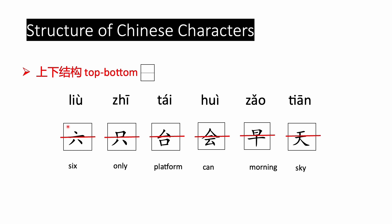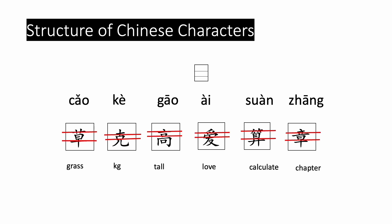These Chinese characters are examples of this structure — let's learn together. For example: 六 (six), 天 (sky), and 早. These are all examples of the top-bottom structure.